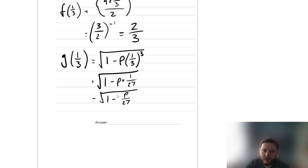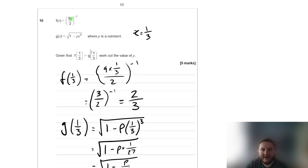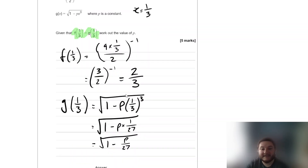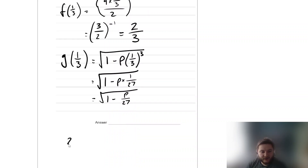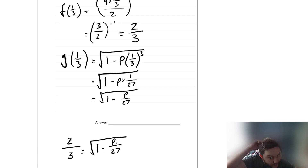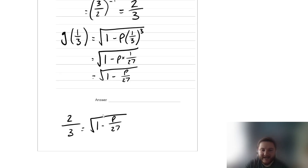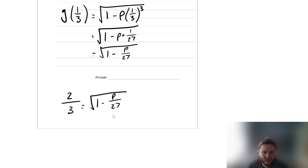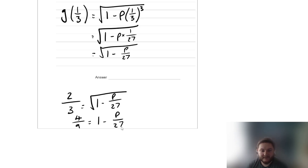Now we know what f of a third and g of a third are, and we're told they're equal, so we set them equal: 2 thirds is equal to the square root of 1 take away p over 27. To solve for p, we need to get rid of the square root by squaring both sides. (2 thirds) squared is 4 over 9, so 4 over 9 equals 1 take away p over 27.